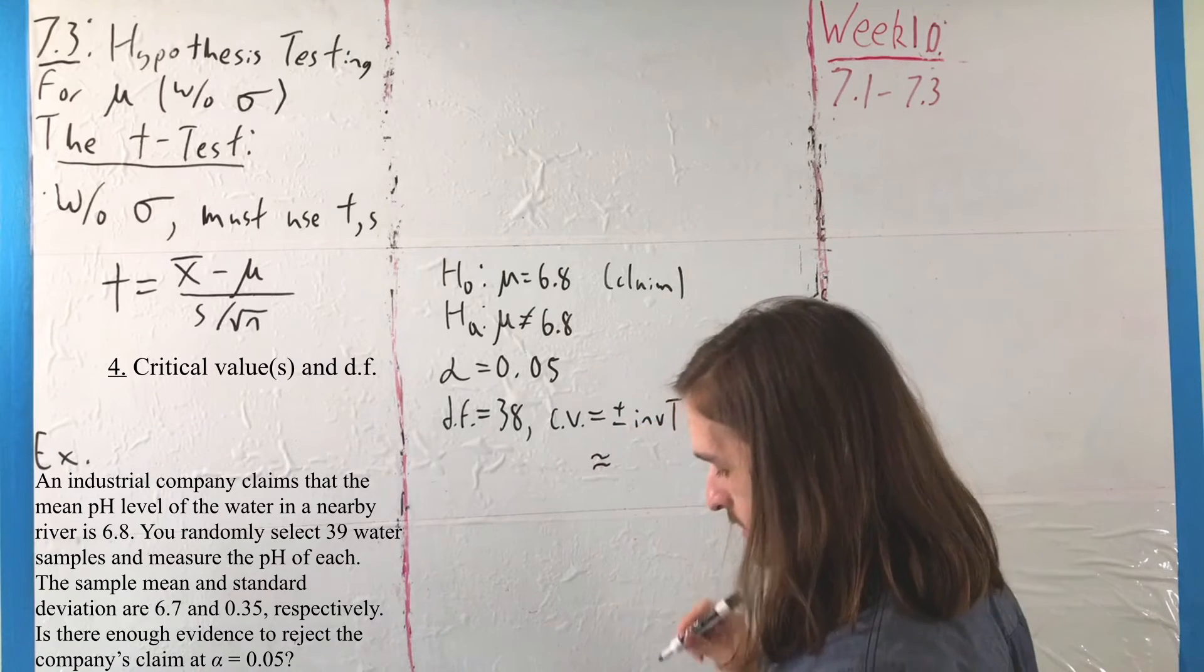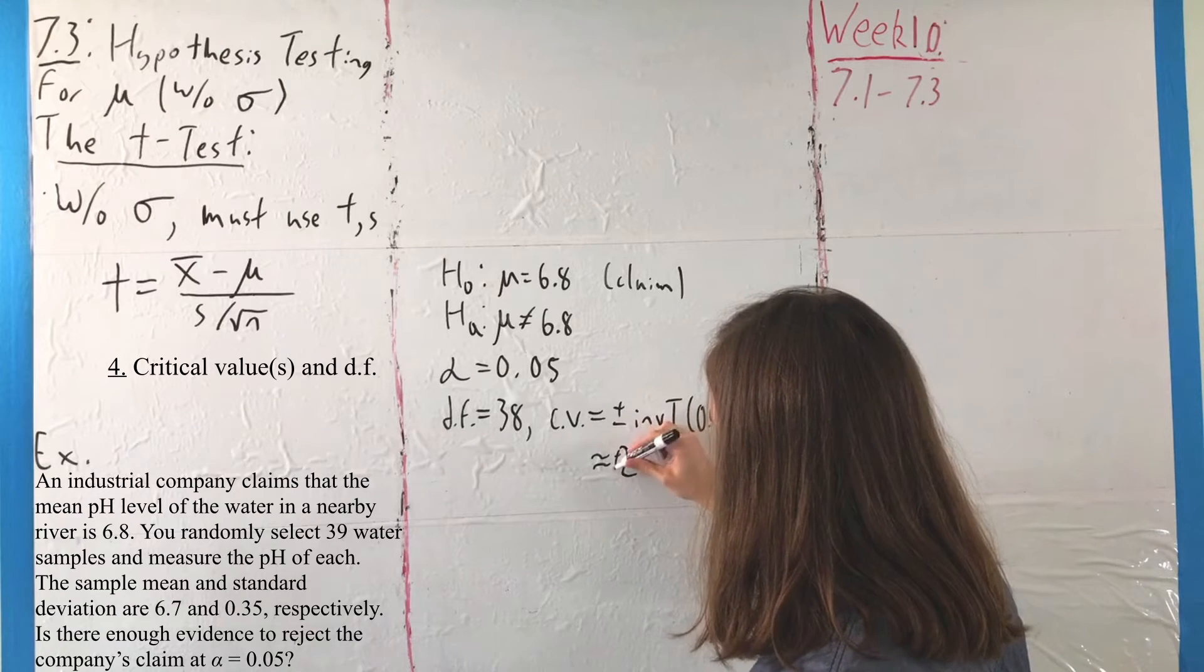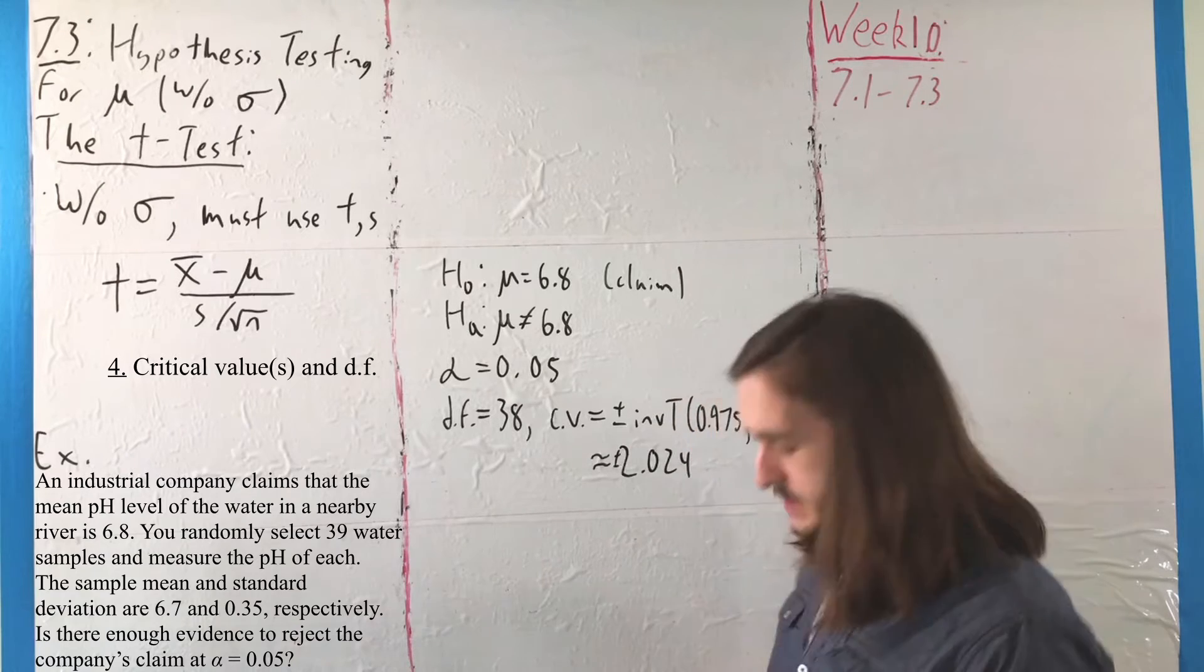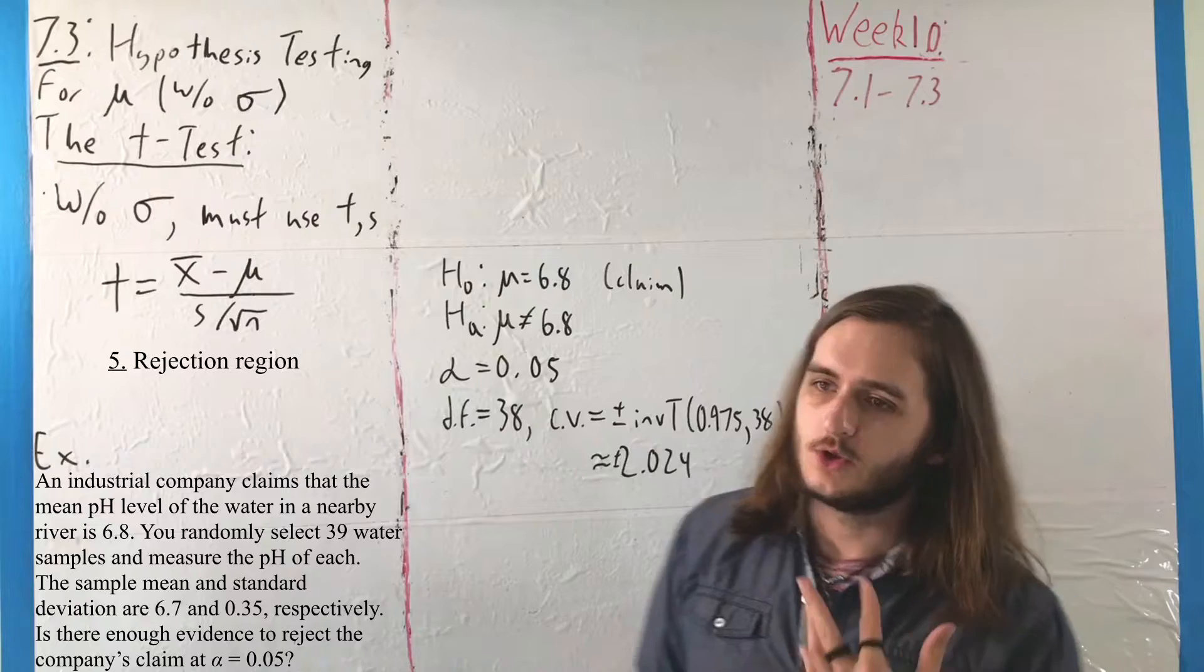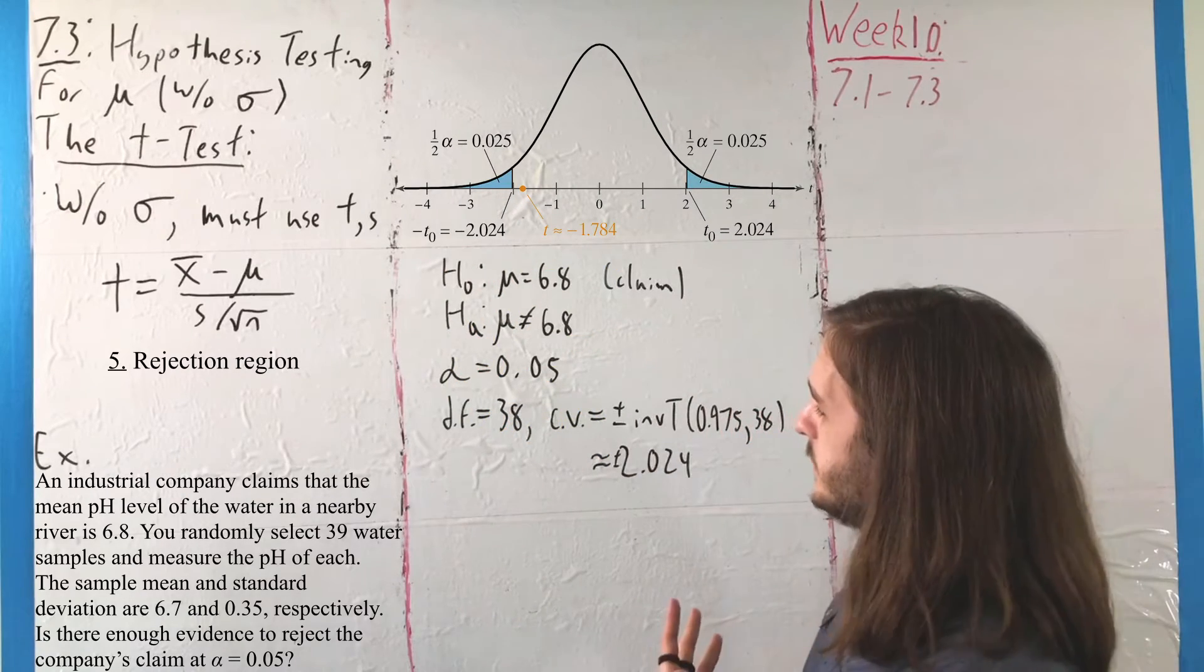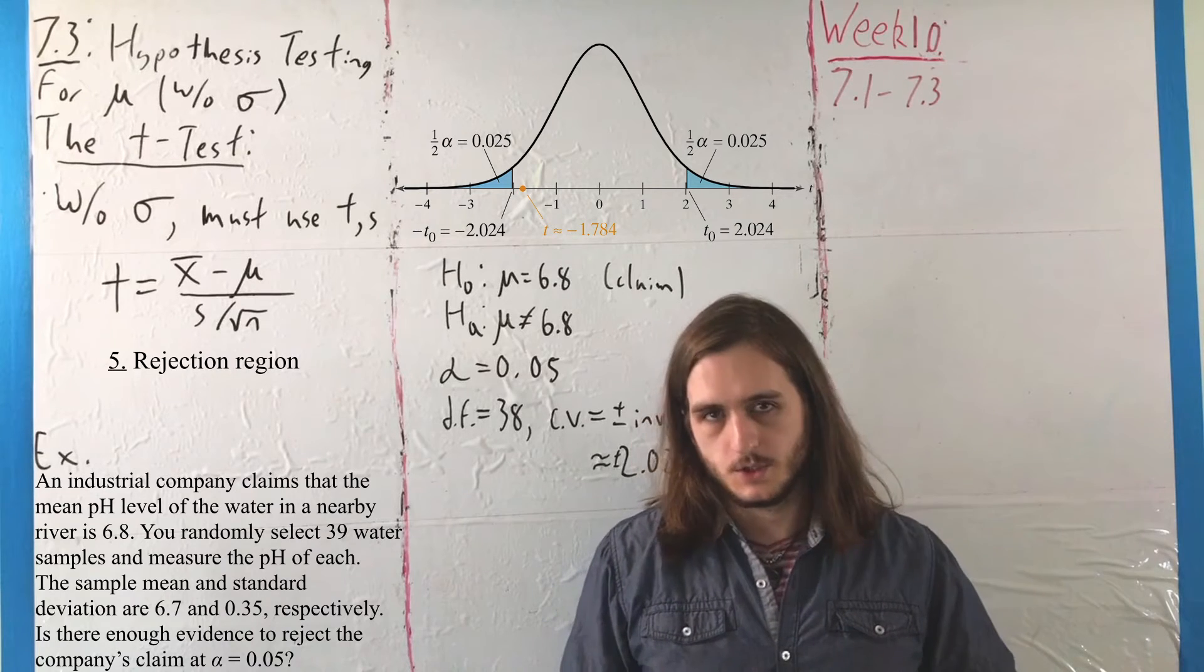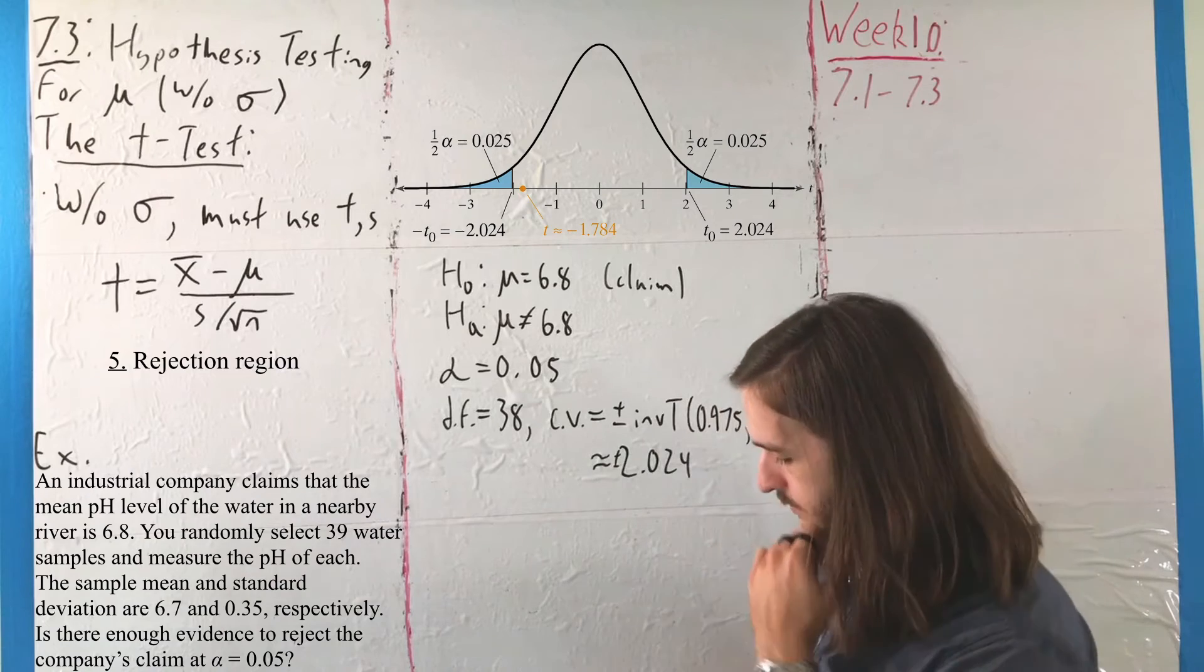But, if you use the calculator, that would be something like inverse T at 0.975 and 38 degrees of freedom for an approximate pair of plus and minus 2.024. Which means, if we want to think about our rejection regions, we want to think about what this distribution looks like. In terms of what we want, our regions are going to be at the ends. That is, we either want things below negative 2.024, if we're looking to reject, or above positive 2.024.